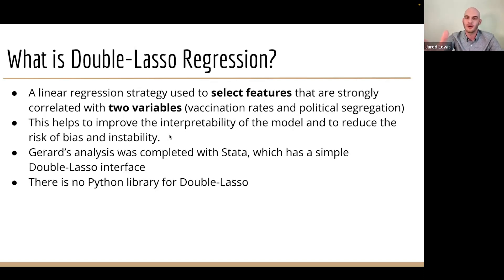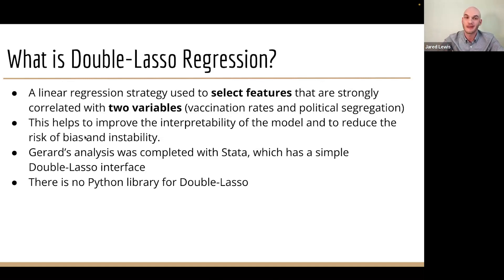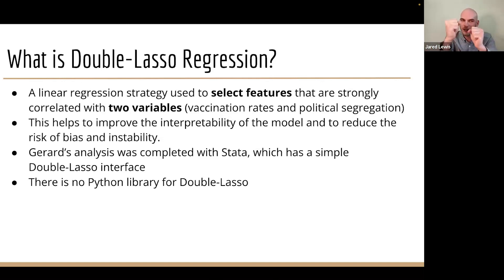We don't want too much multicollinearity inside our model. For example, if I were to include both percent Democrat and percent Republican as two separate variables in our regression, those two things are essentially measuring the same thing but taking the influence of the coefficients into two separate variables. So we want just one — percent Democrat is what we're using — so that we get a more pure representation of that influence.